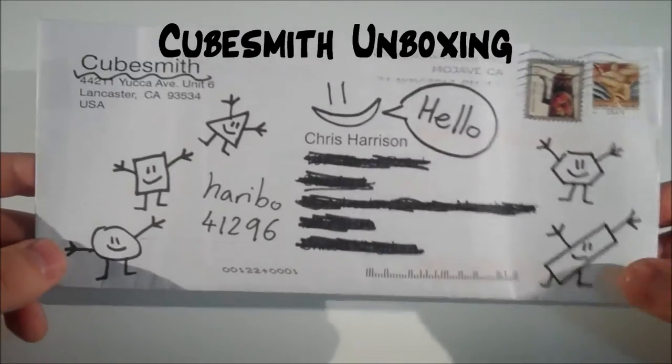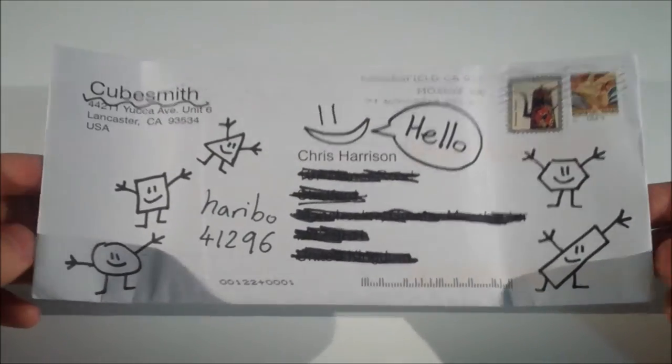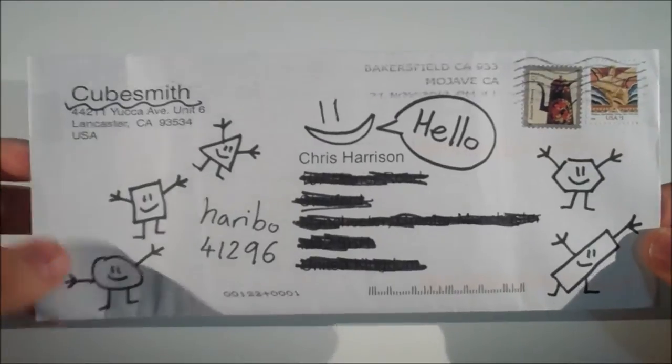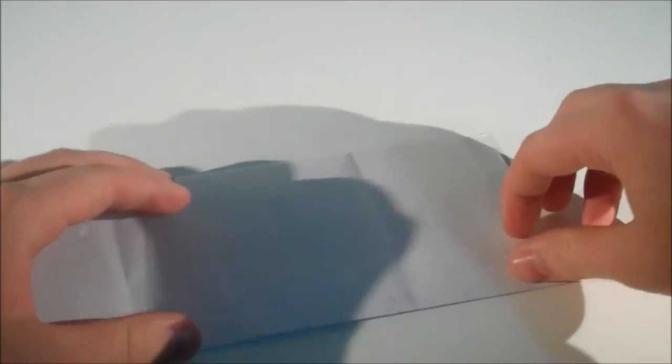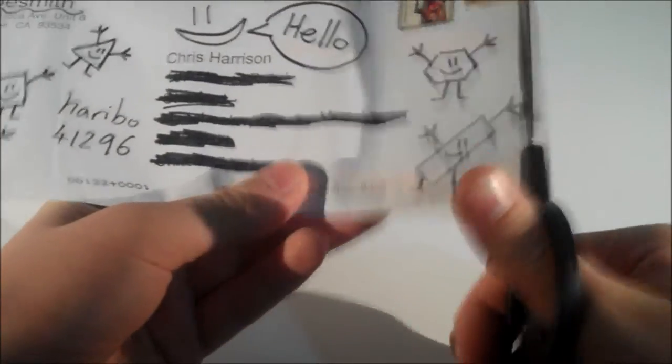What I ordered from Cubesmith was actually a set of half-brights with fluorescent blue. I saw a cube using them at the UK Open and I thought that they actually looked really nice, so I'm going to buy some and that's exactly what I did.